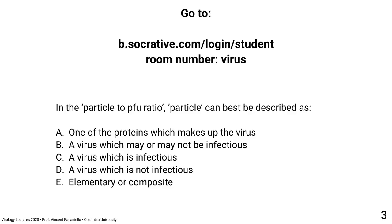Question: in the particle-to-PFU ratio, 'particle' can best be described as: one of the proteins which makes up the virus; a virus which may or may not be infectious; a virus which is infectious; a virus which is not infectious; or elementary or composite. The answer: a virus which may or may not be infectious. The numerator counts all particles — infectious plus non-infectious — while the denominator is infectivity. That's where you get the particle-to-PFU ratio.